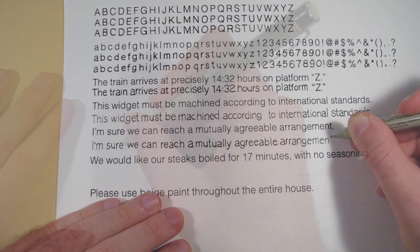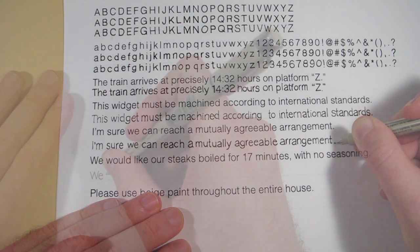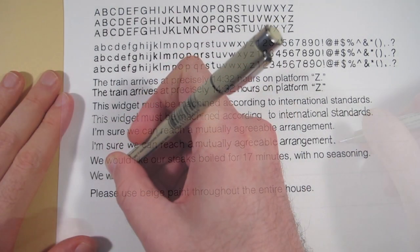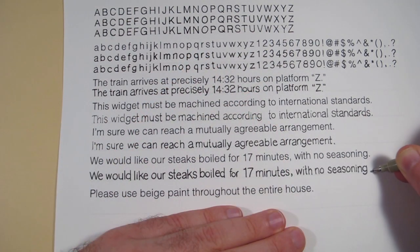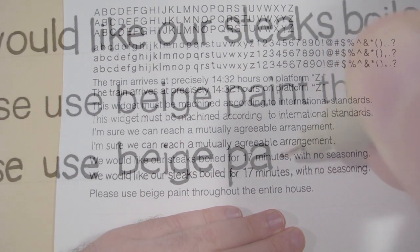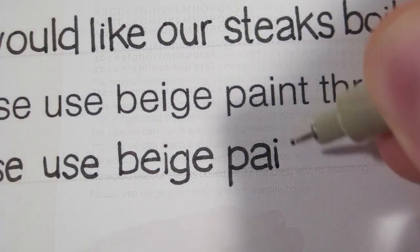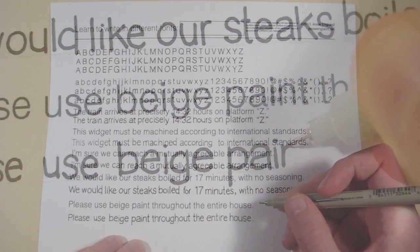I'm sure we can reach a mutually agreeable arrangement. We would like our steaks boiled for 17 minutes, with no seasoning. Please, use beige paint throughout the entire house.